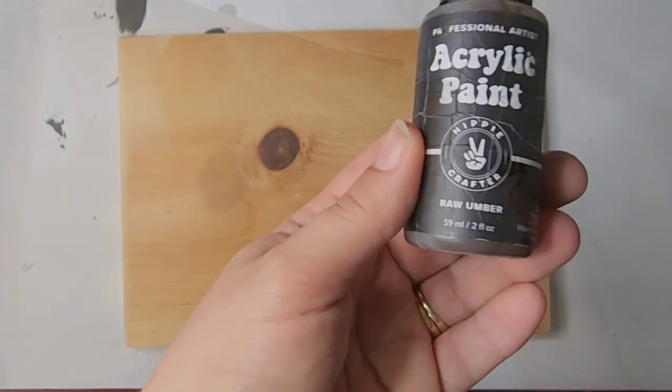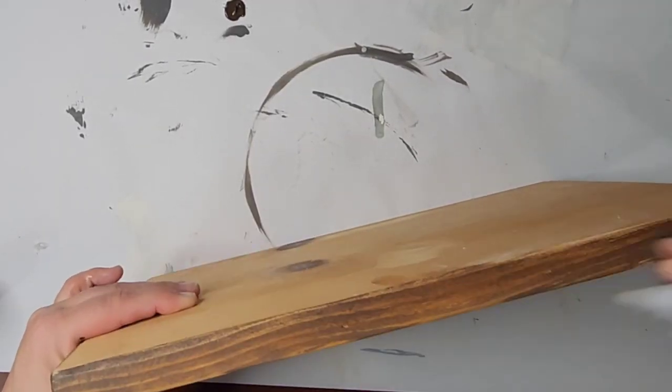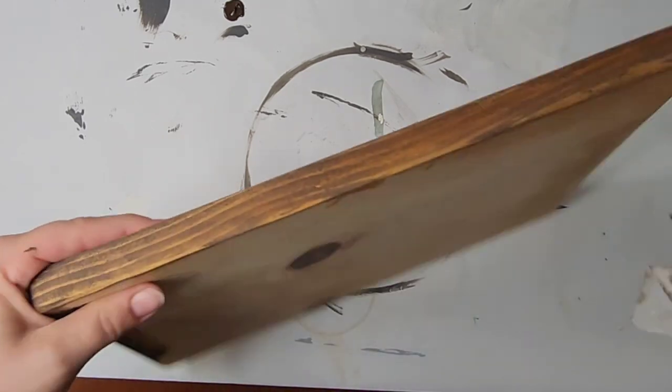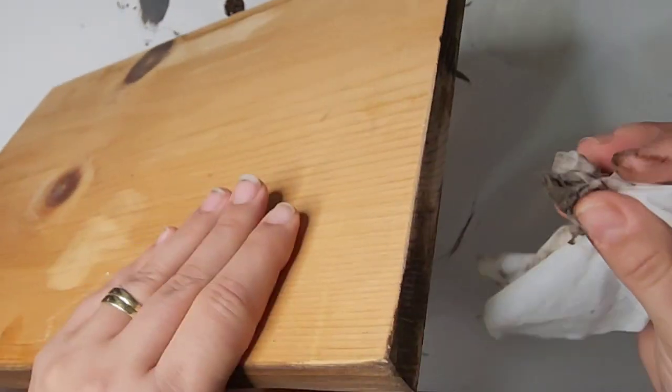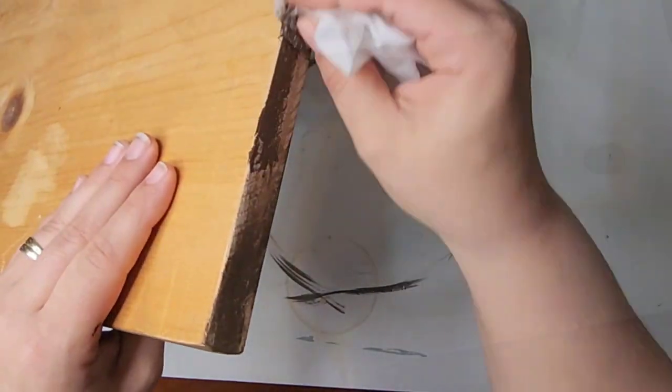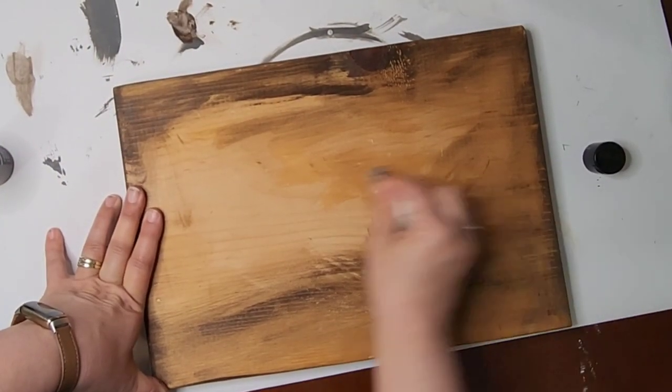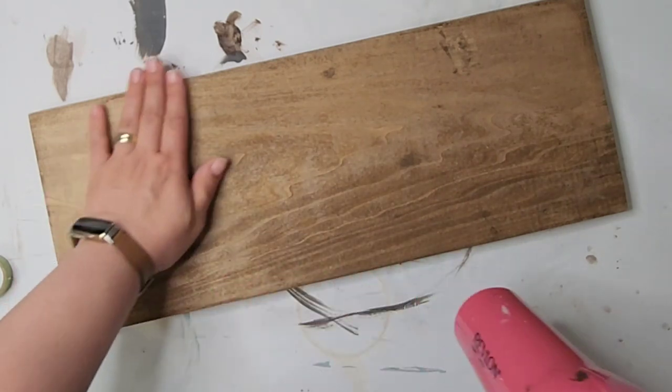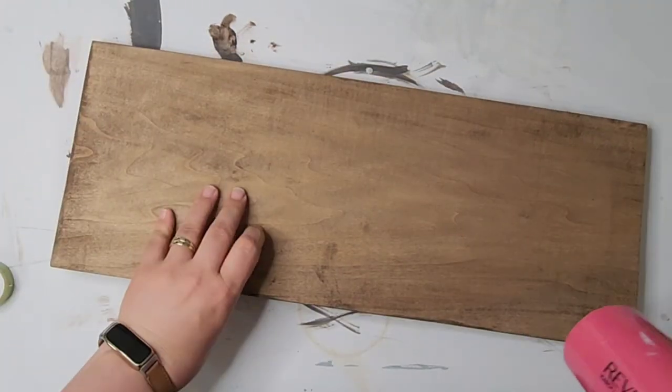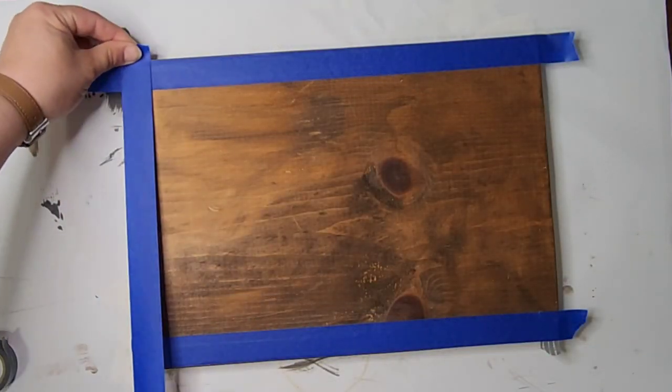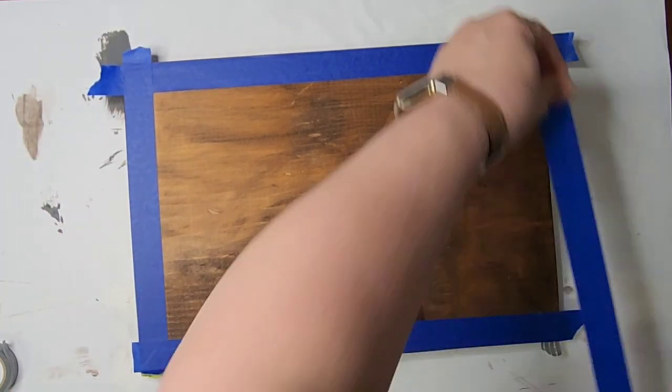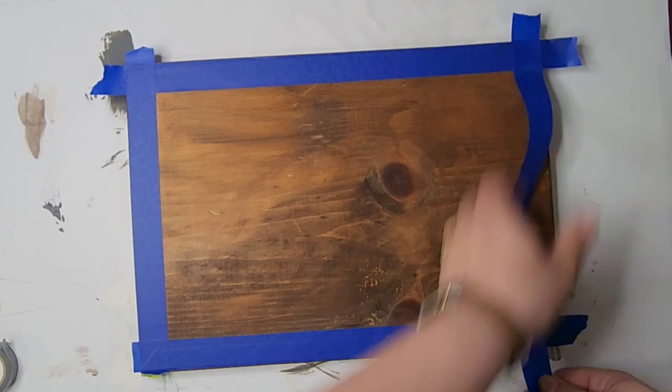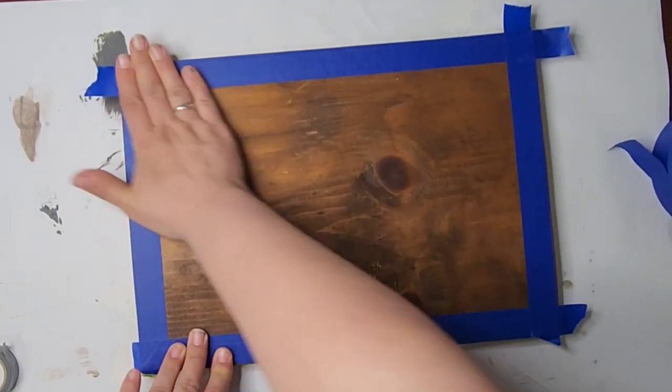This involves some scrap boards I had in my garage. This scrap board is a 1 by 12 cut to 14 inches long. I am staining it my favorite way with that raw umber paint from Hippie Crafter. This second board is a 1 by 8 cut to 18 inches long, so I'm going to make them into some fun lemon decor.